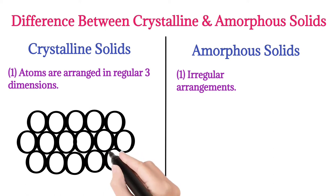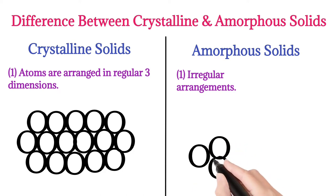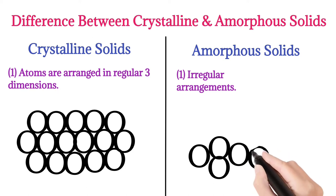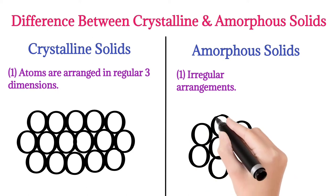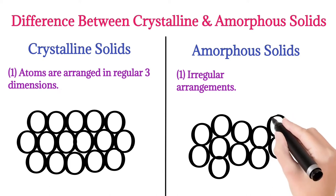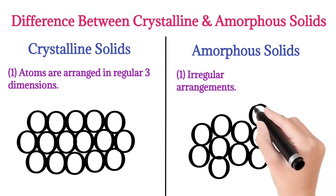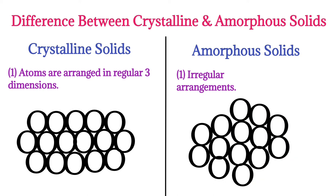But in the case of amorphous solid, the atoms are arranged in an irregular manner — in a random way. Here we see that there is more space between the atoms.